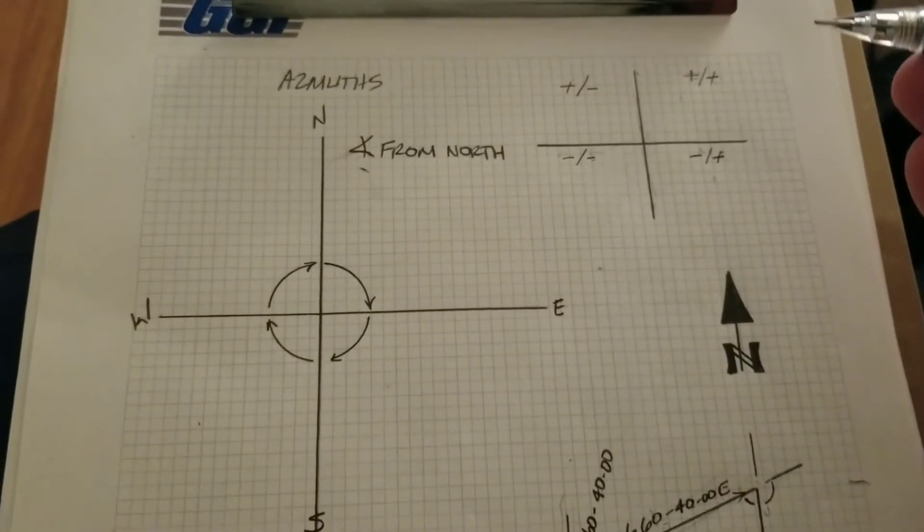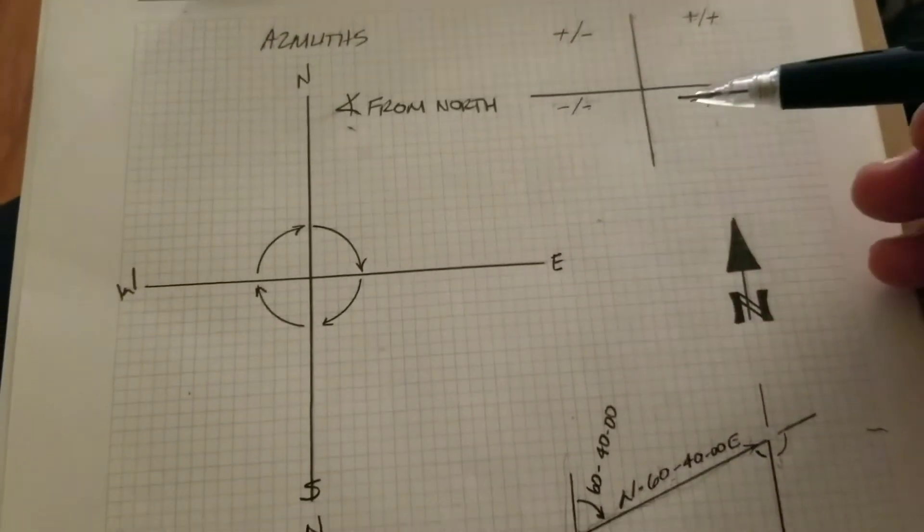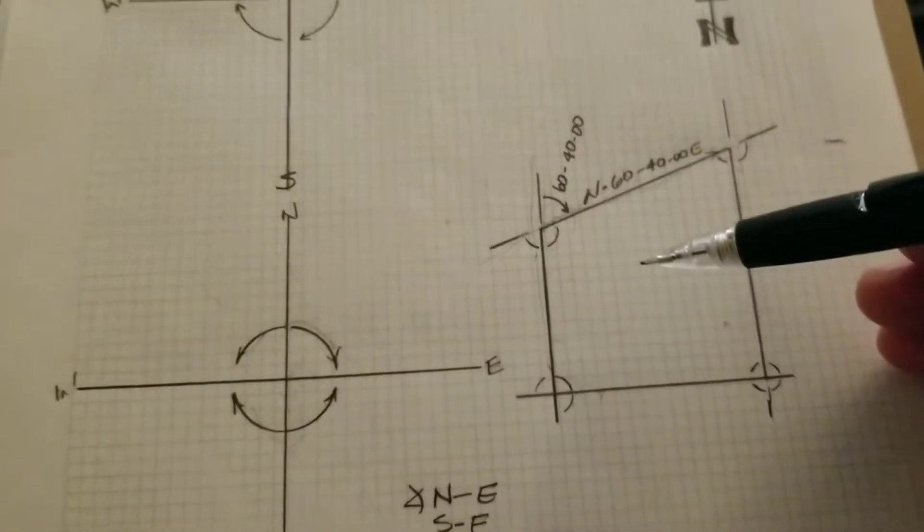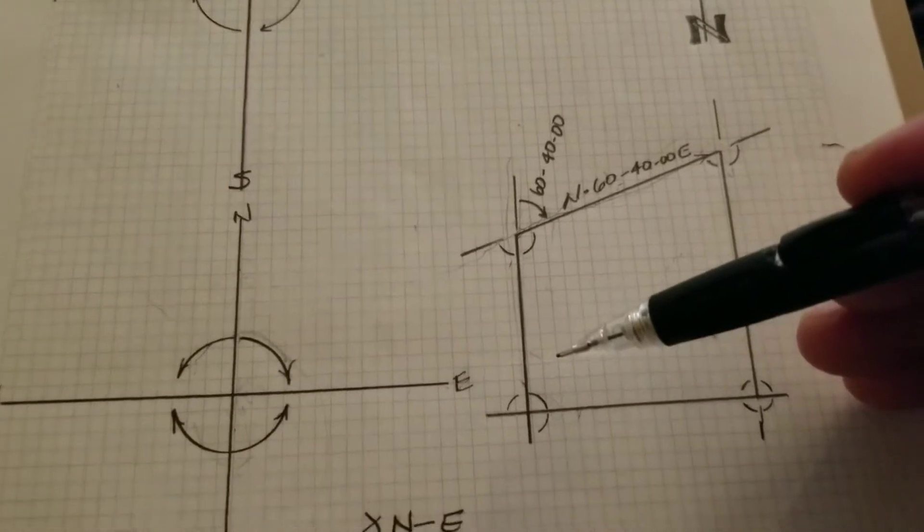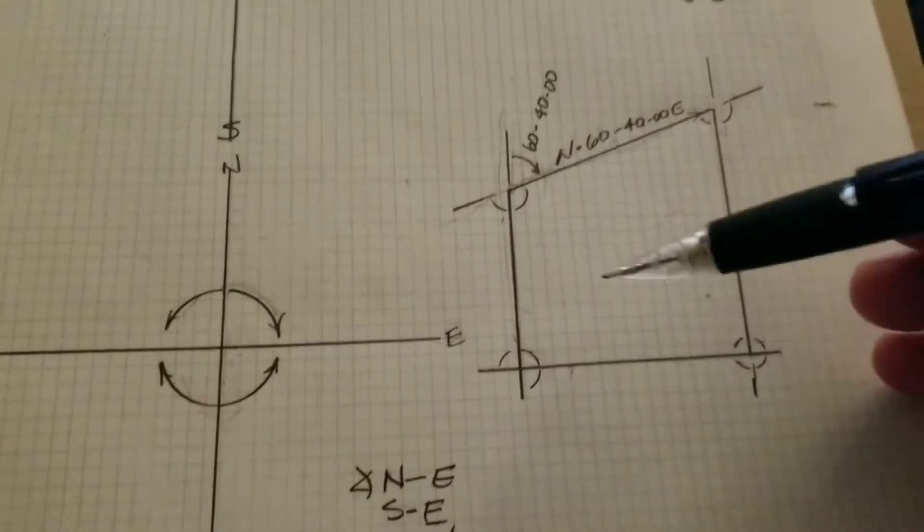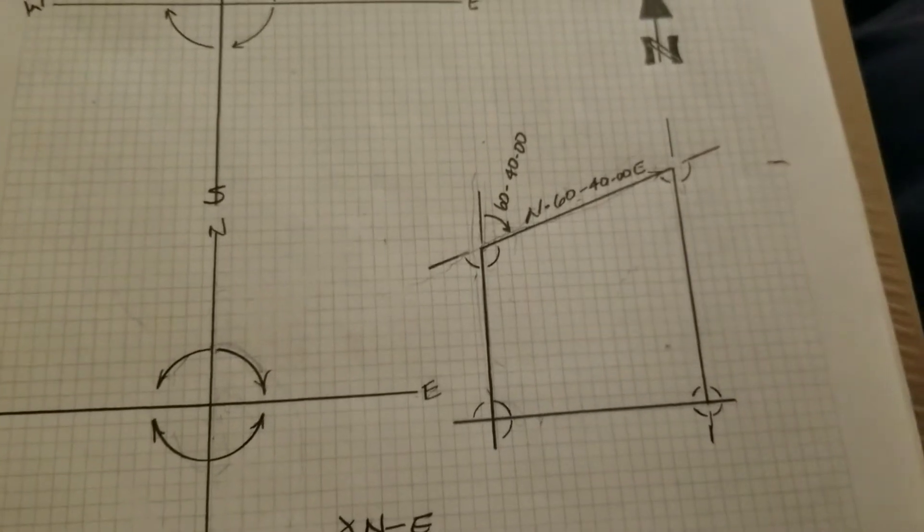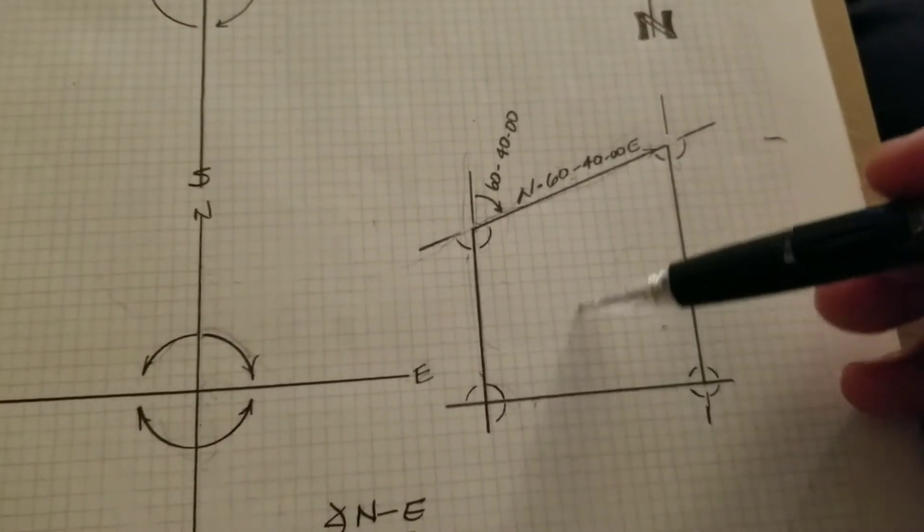All right, let's talk about angles, azimuths, and bearings. So an angle, let's do this little diagram here, an angle is just a numerical value. Unless it's assigned to something, it's just used as a type of measurement.